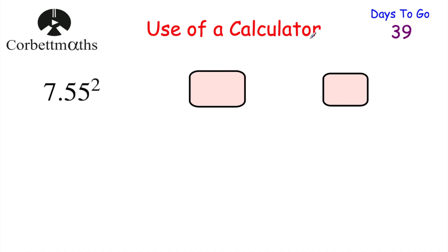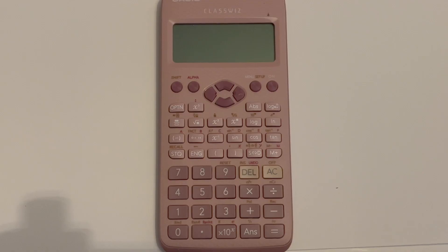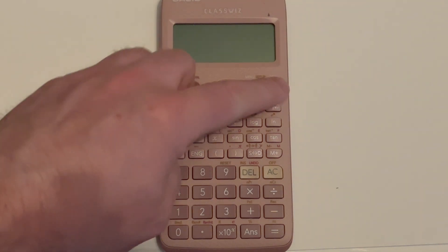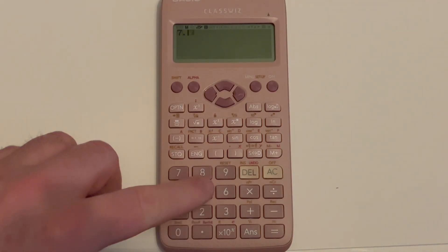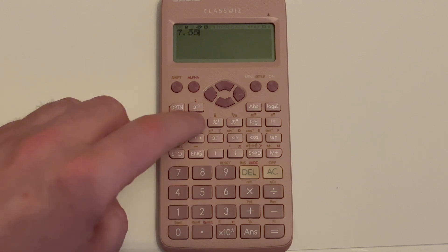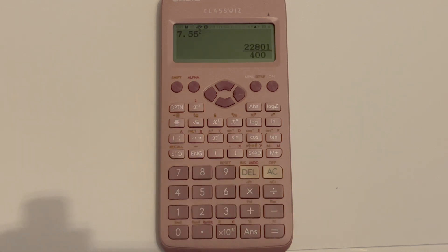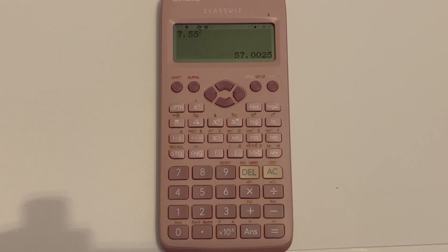In this video I'm going to give you some questions to try yourself. Our first question is to work out 7.55 squared. Press pause now and work this out in your calculator. To do this, press 7.55, then press the squared button — that little x with the squared above it — then press equals. You may get a fraction; if you want a decimal, press the SD button. The answer is 57.0025.